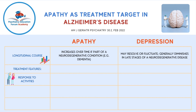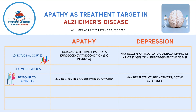Turning to treatment features — first is response to activities. A person with apathy may be amenable to structured activity, whereas a person with depression mostly resists structured activity and engages in active avoidance.